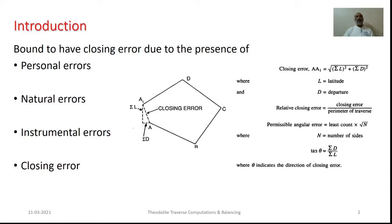As we discussed in our earlier presentation, because of personal errors, natural errors, and instrumental errors, there has to be presence of certain closing errors. This particular closing error can be considered in its two components as sigmaL and sigmaD. This error AF1 can be worked out by making use of this particular expression. We can express the relative closing error as closing error E divided by the perimeter of traverse P, which is usually expressed as 1 over P by E.